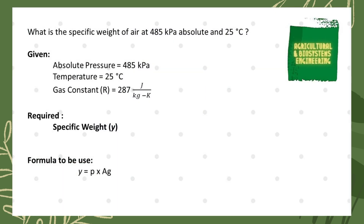The first thing we need to do is identify our given values. Our absolute pressure is 485 kilopascal, our temperature is 25 degrees Celsius, and our gas constant denoted by R is 287 joules per kilogram per degree Kelvin. What is required in this problem is our specific weight or unit weight.